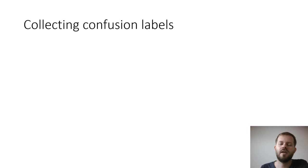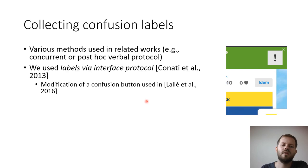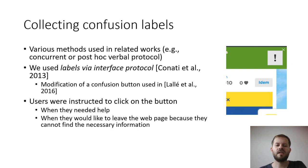To collect confusion labels, there are multiple protocols. In related works, a concurrent or post-hoc verbal protocol is often used. In our work, we decided to use a labels-of-interface protocol, first proposed by Konati et al. in 2013, and specifically we modified the confusion button used in the work of Lala et al. from 2016. Instead of text reading 'I am confused,' we used only an exclamation mark. We made this change based on a small pilot study showing that users were hesitant to click the button, possibly due to social desirability bias, so we changed it to something more neutral.